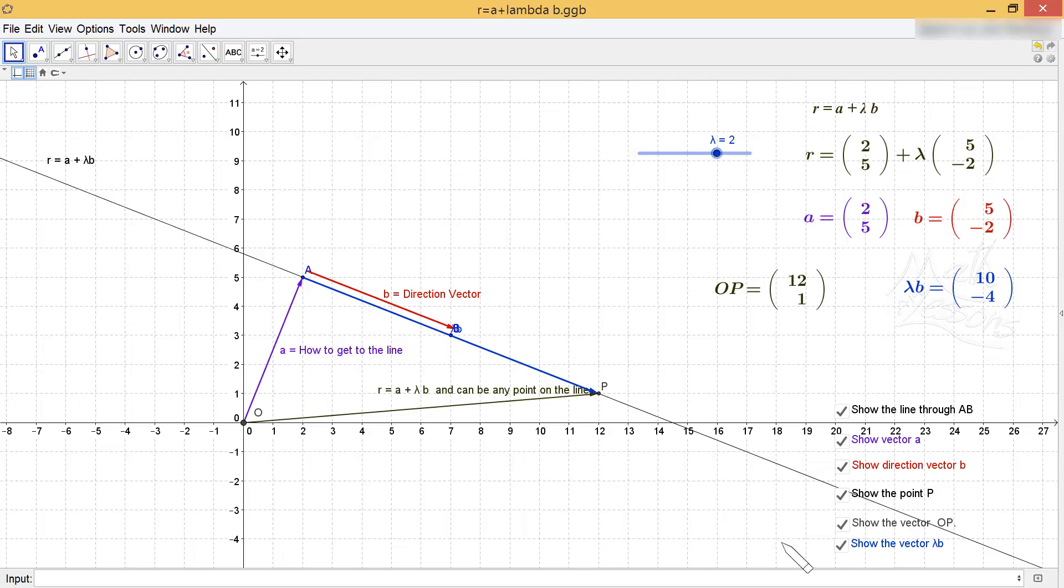I'm just going to show you also the vector lambda AB. So you can see that in action. So when we move it to minus 1, it's much easier to see that vector lambda AB. That is the vector of lambda times B. So you're going from O to A, then you're adding on lambda lots of B. There's another way of looking at it.